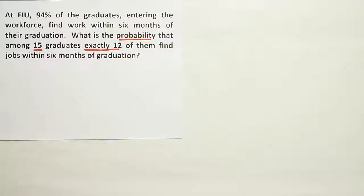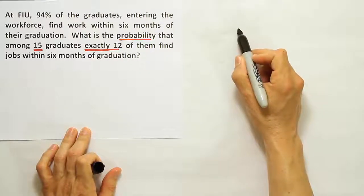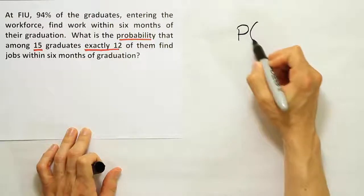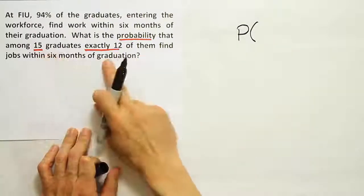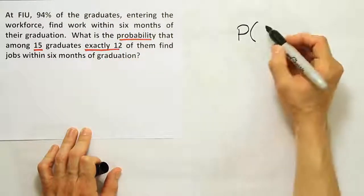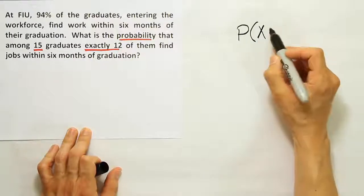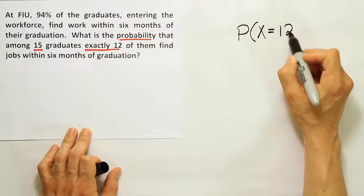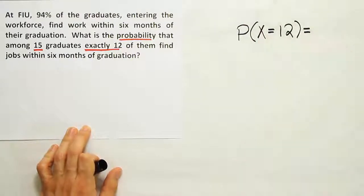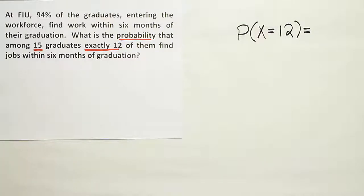So overall, we think that it's binomial. We can use that approach then. So we're going to say probability then that exactly 12 of them find jobs—probability that the number of people who find jobs, X, is equal to 12. So we're going to let X be the number of students who find jobs.